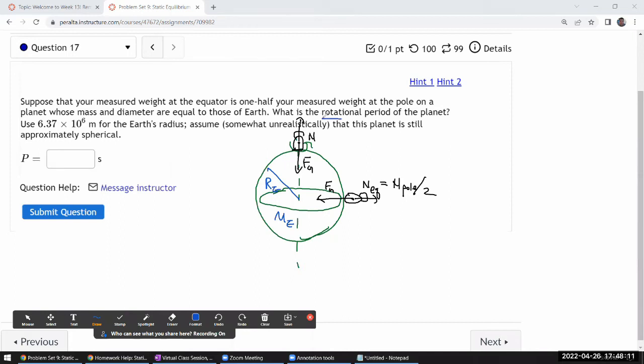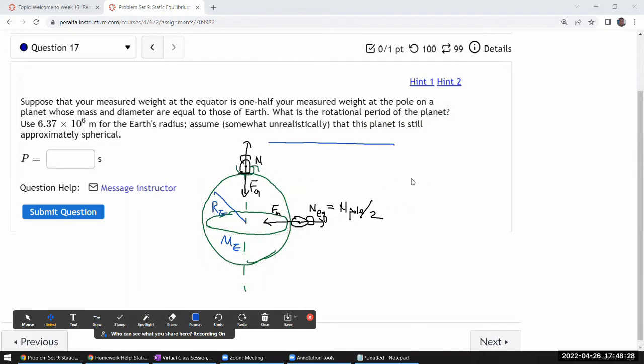On a planet whose mass and diameter are equal to those of Earth, it's asking what is the rotational period of the planet. Assume that this planet is somewhat approximately spherical. After reading through this question and possibly diagramming everything, if it feels like you don't have all the information, I think that's an okay feeling to have.